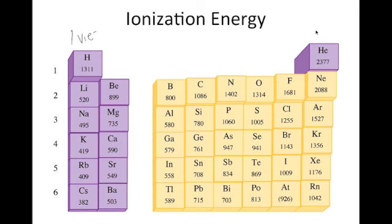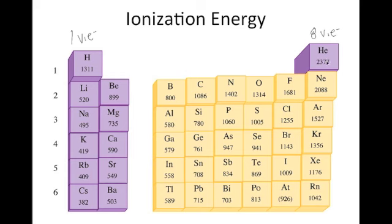The noble gases over here have eight valence electrons — a very stable, full octet in their outer energy level — so they don't want to get rid of anything, and it's going to take a significant amount of energy to convince them to give up an electron. That explains why ionization energy goes up going across a period. The reason it goes down as you go down a group is because elements at the bottom have lots of electrons, so if you were to take one away, they're fine with it. Whereas helium only has two electrons and is going to hold on to those with everything it's got.